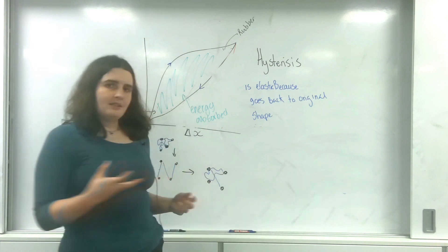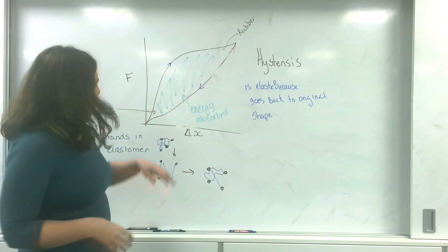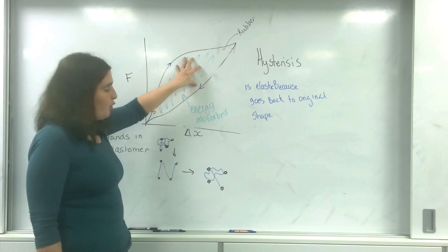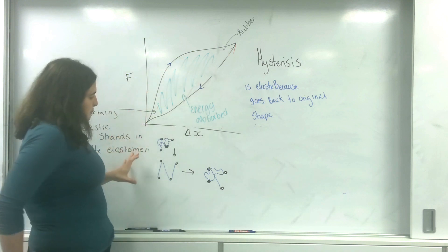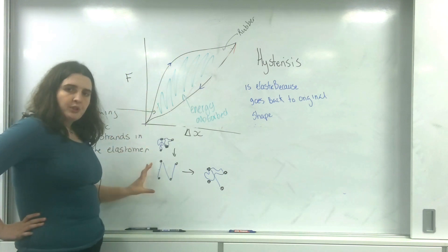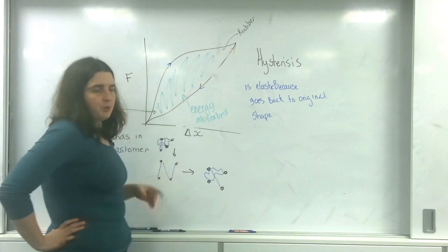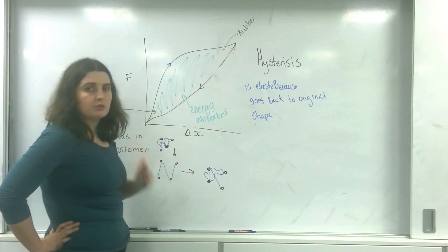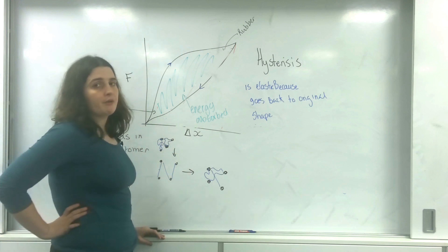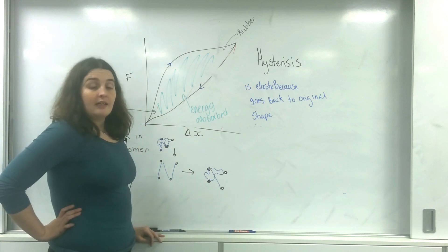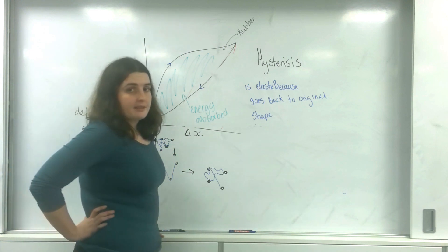That is hysteresis. It's important to know about this area of the graph — this is energy that's being absorbed, being used to permanently, plastically deform the bonds between the material. And that is hysteresis.